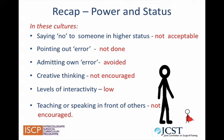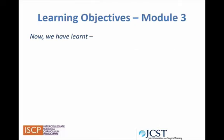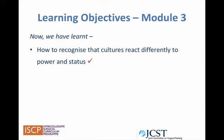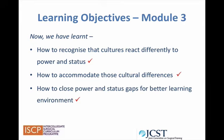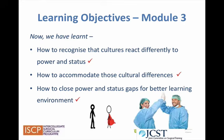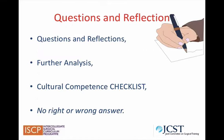Strategies discussed throughout this module will help address some of these cultural customs. Let's recap on the learning objectives set out at the beginning of this module. We've now learnt how to recognise that cultures react differently to power and status, how to accommodate those cultural differences, and how to close power and status gaps for a better learning environment. You have now completed Module 3. Upon completion, there's a link to Word documents which you can download, including questions and reflections on Videos 1 and 2, further analysis, and a cultural competence checklist. Please remember there are no right or wrong answers.